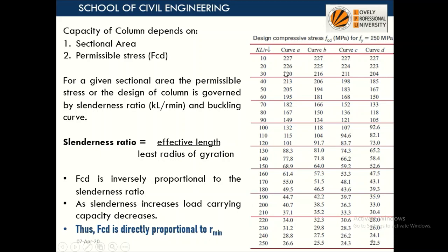As slenderness ratio increases, load carrying capacity also reduces because it is associated with area times FCD. So we can conclude that FCD is directly proportional to R minimum — if R minimum is more, then permissible stress will be more.